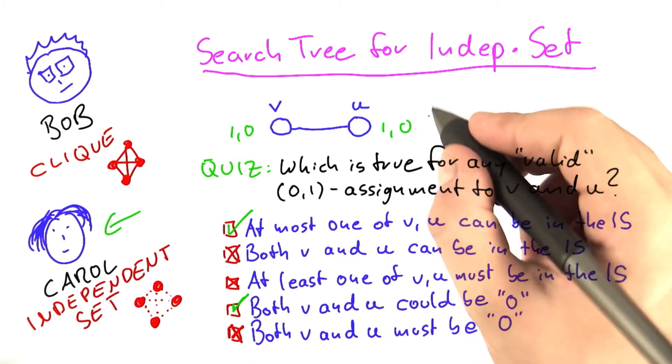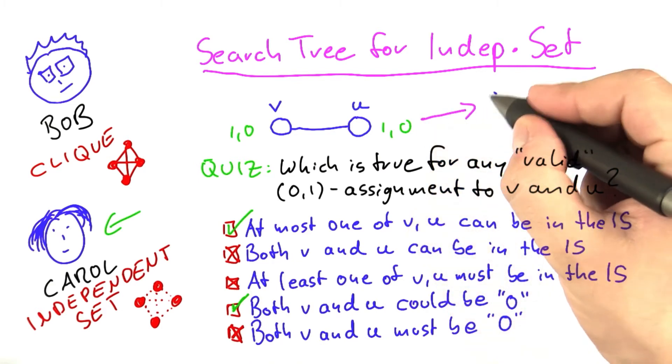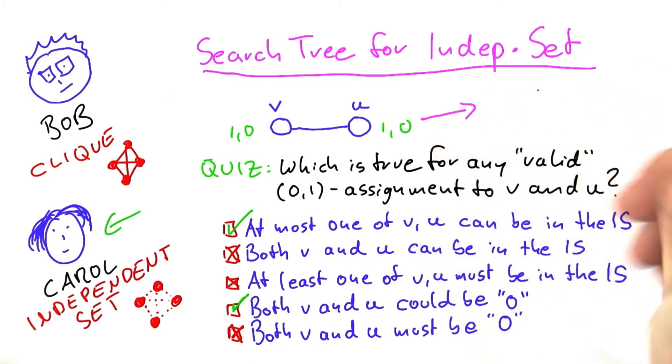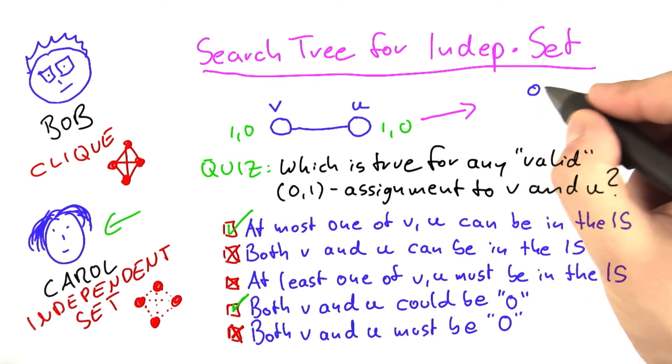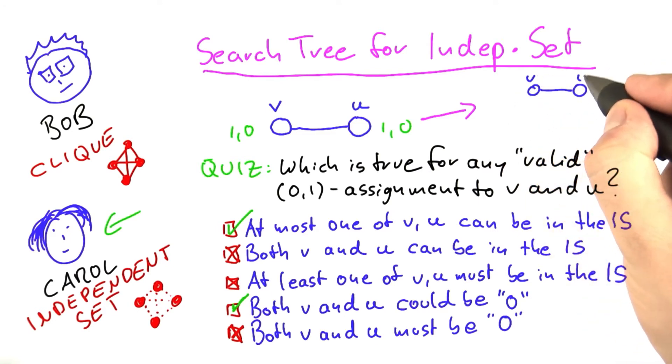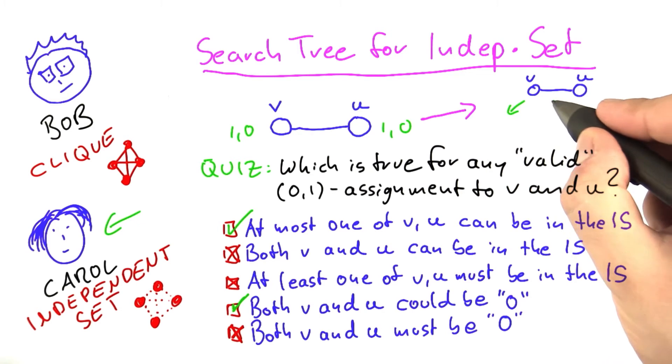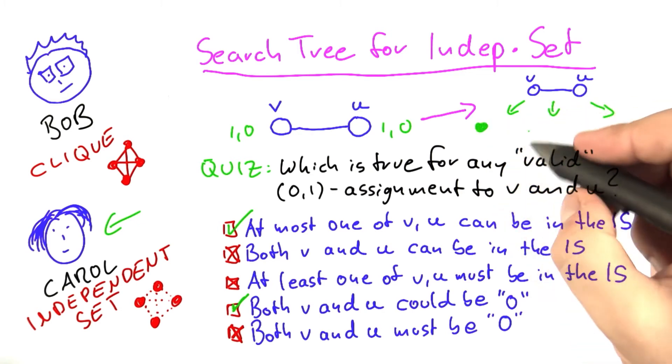If you take all of those observations together, it's pretty cool because this now gives us a new search tree strategy that is actually quite similar to vertex cover. So we have our two vertices v and u here. Just as we did with vertex cover, we can branch into three different possibilities.